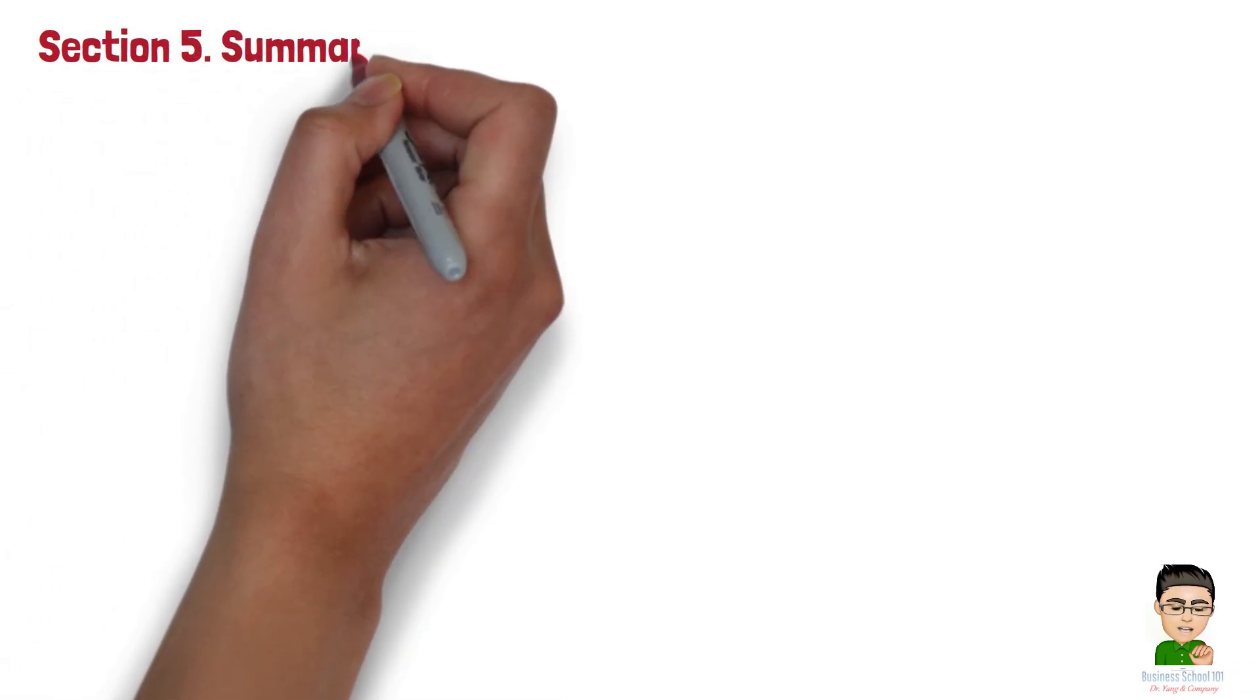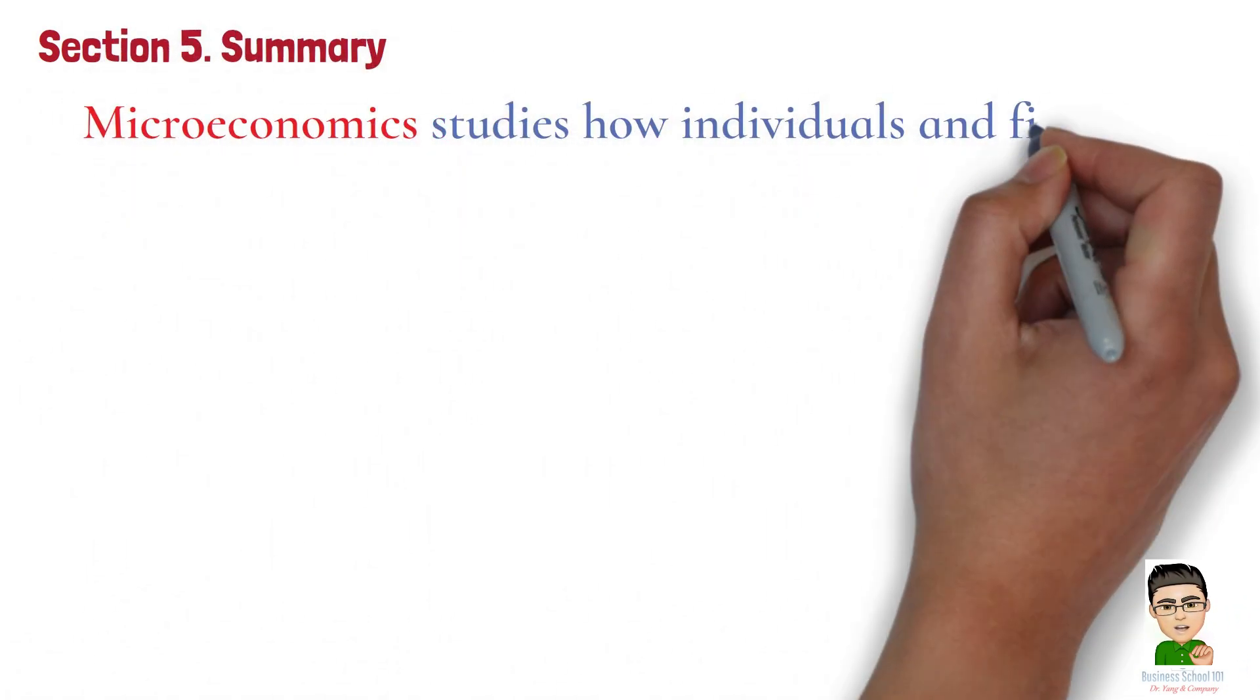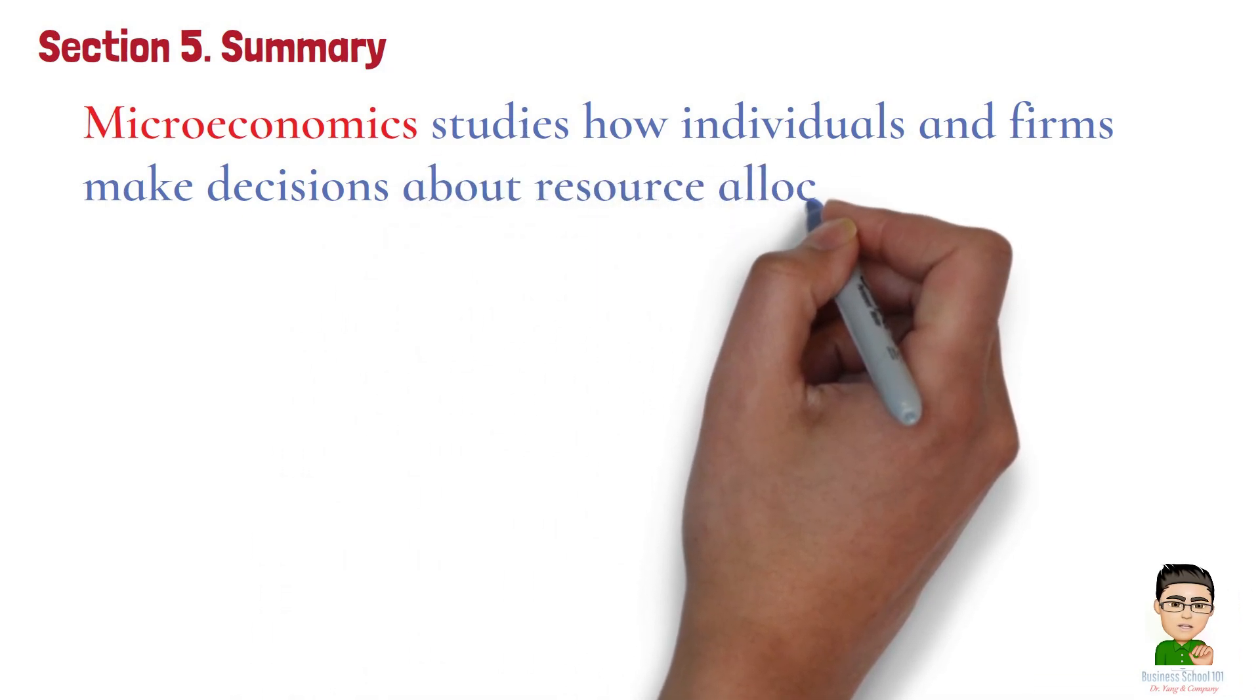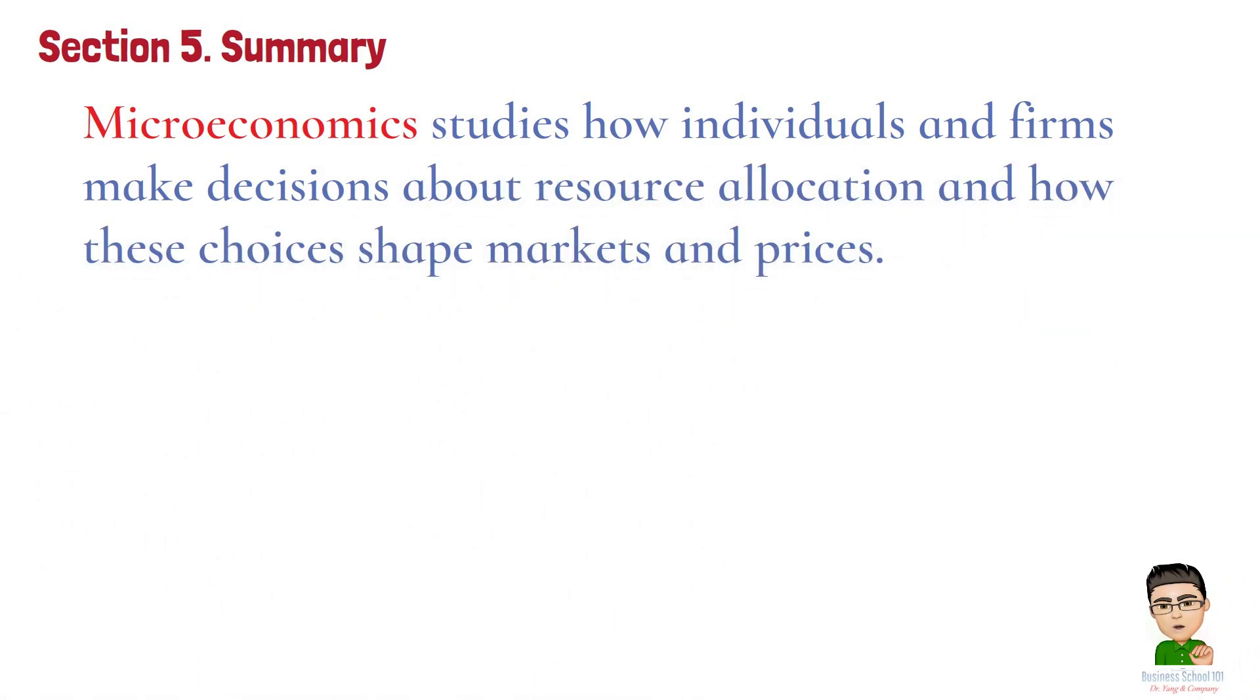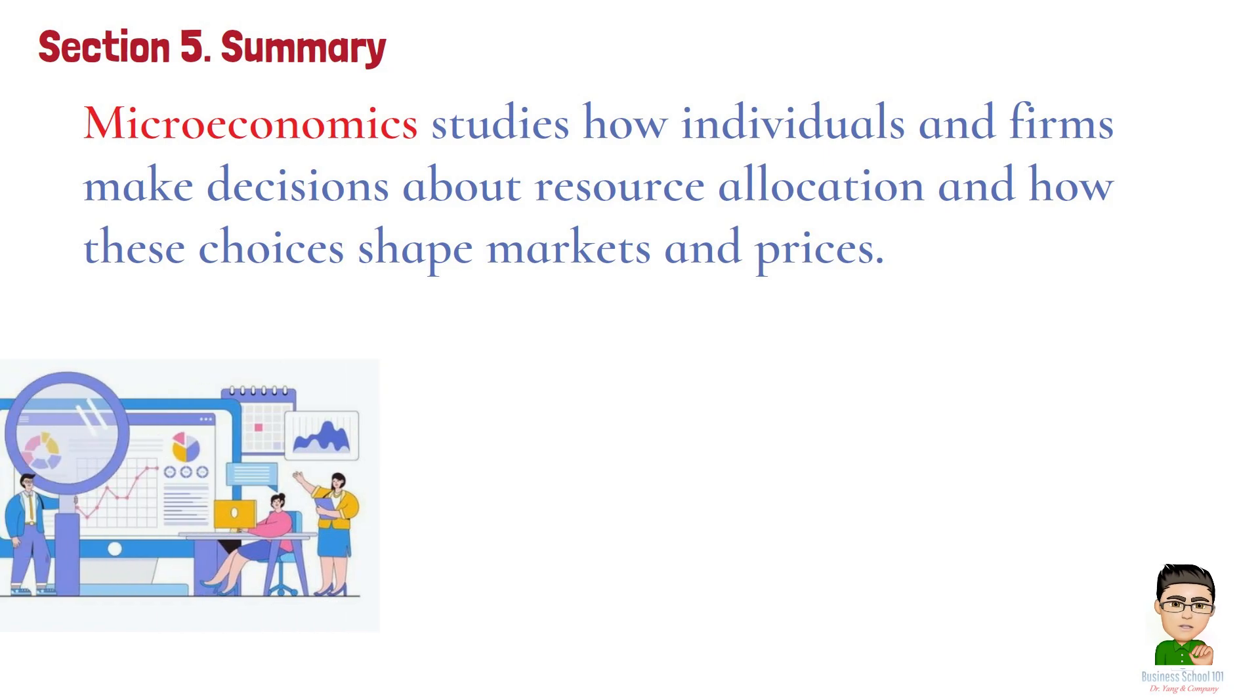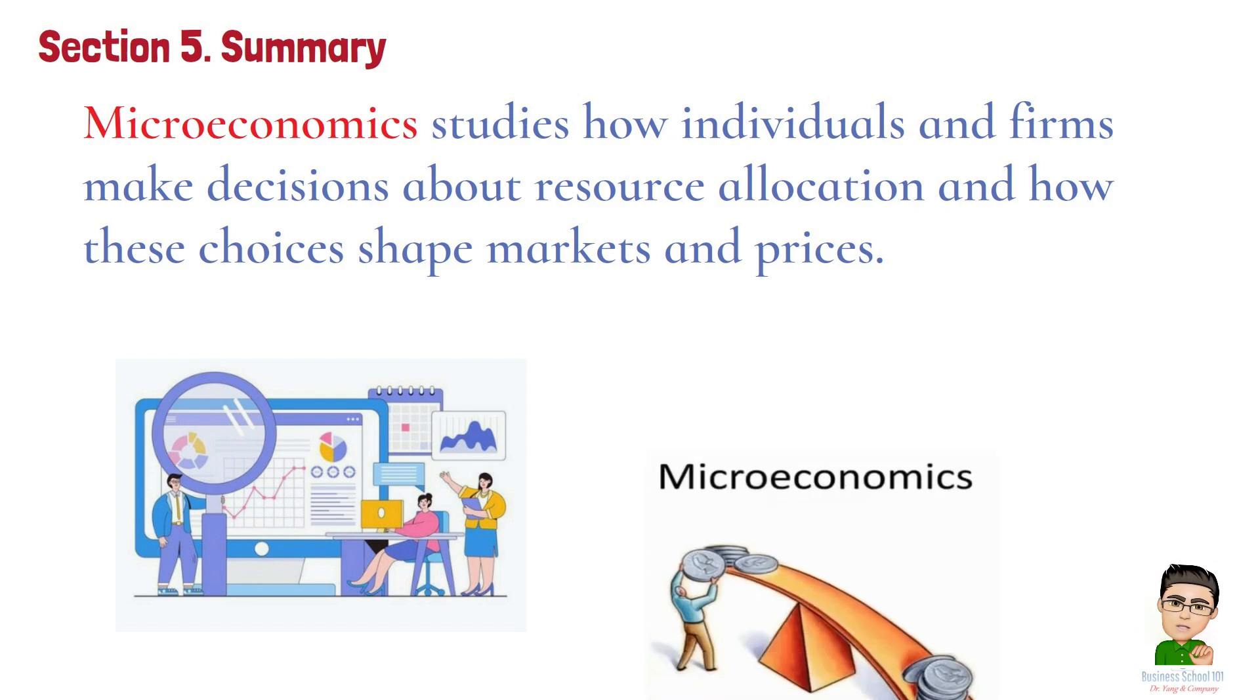Section 5. Summary. To sum up, microeconomics studies how individuals and firms make decisions about resource allocation and how these choices shape markets and prices. It is essential to understand because it provides insights into market dynamics, informs economic policy, and helps individuals and businesses make better financial decisions, ultimately improving economic efficiency and outcomes.